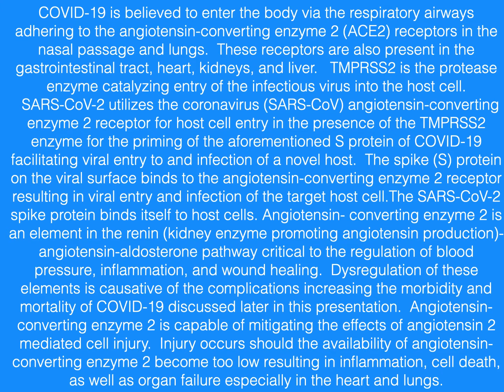TMPRSS2 is the protease enzyme catalyzing entry of the infectious virus into the host cell. SARS-CoV-2 utilizes the angiotensin-converting enzyme II receptor for whole cell entry in the presence of the TMPRSS2 enzyme for the priming of the S protein of COVID-19, facilitating viral entry and infection of a novel host. The spike protein on the viral surface binds to the angiotensin-converting enzyme II receptor, resulting in viral entry and infection of the target host cell.